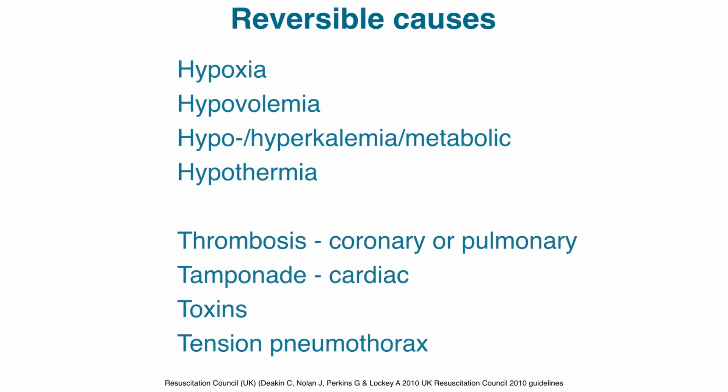With ultrasound we can assess the issues marked in red: hypovolemia, thrombosis — coronary or pulmonary — and cardiac tamponade. And if we also use ultrasound of the lungs, we can even identify a tension pneumothorax.